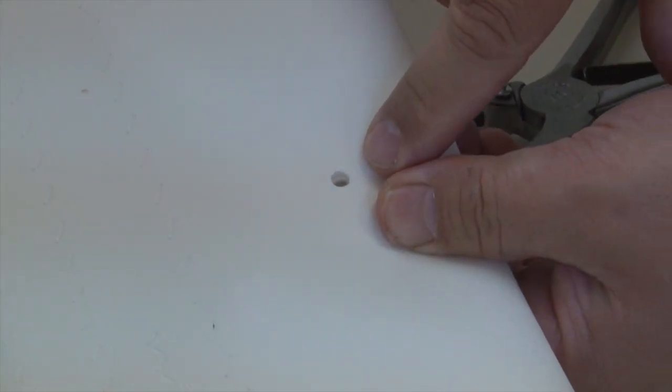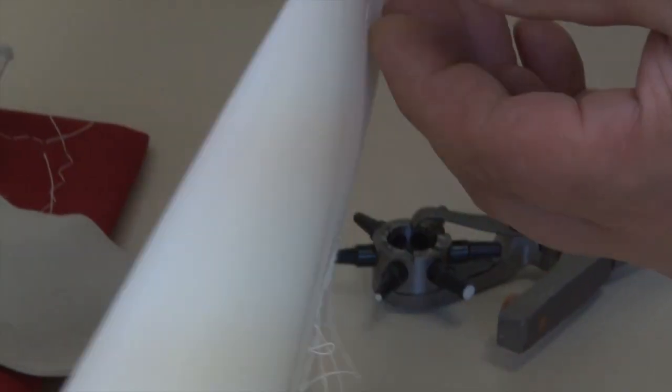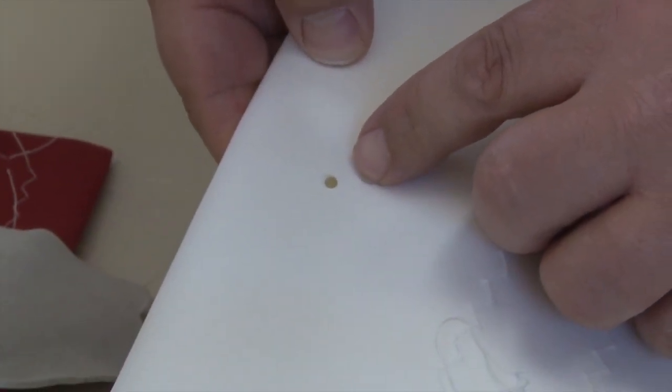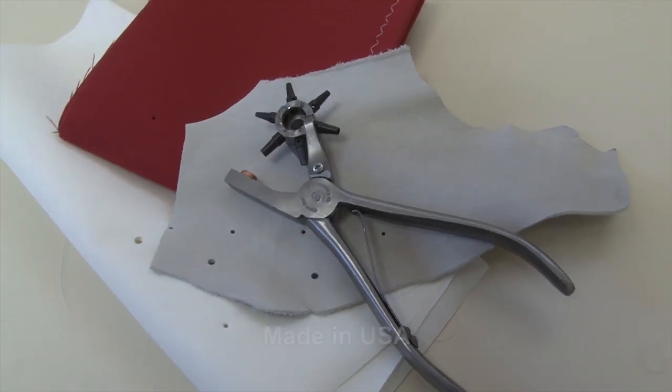Take a look at the back side. So this is excellent for installing rivets, putting holes in leather, or installing fasteners.